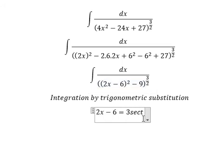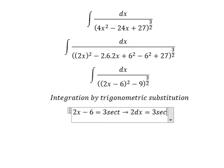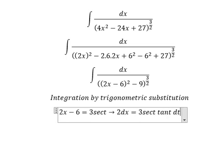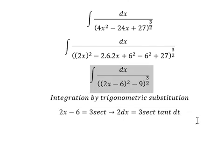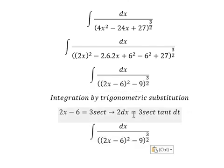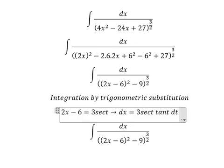Next, I need to do first derivative for both sides. So we have 2 dx equal to 3 sec of t times tan t dt. Because we don't have number 2, so we need to divide both sides by number 2.